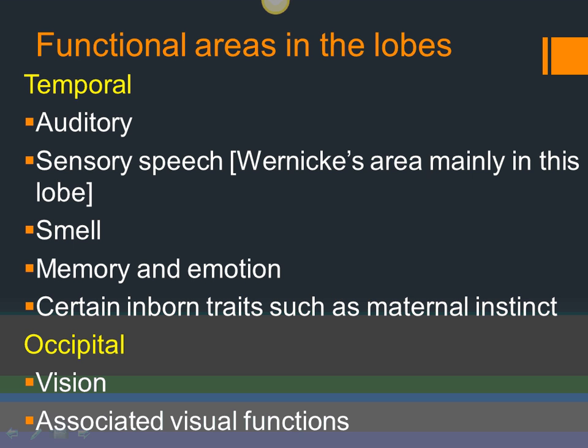The occipital lobe is responsible for vision. A way to remember: the eyes are in front, the occipital lobe is at the back — that's where vision is perceived. Associated visual functions include color recognition and visual memory — for example, as a child you learned that something red and hot is dangerous, so you associate red with caution. This visual association is processed in the occipital lobe.